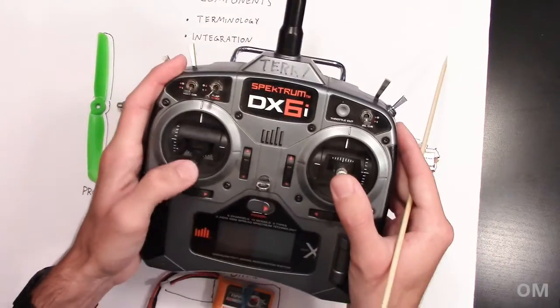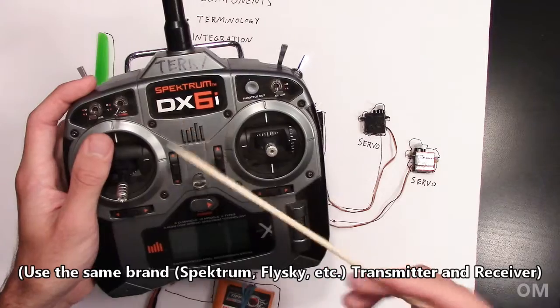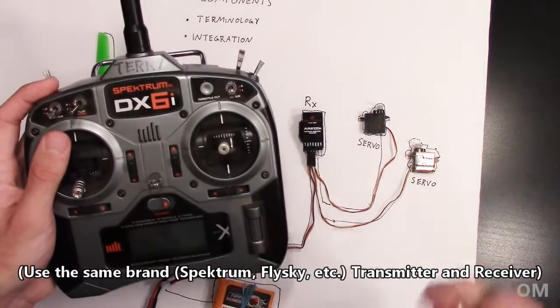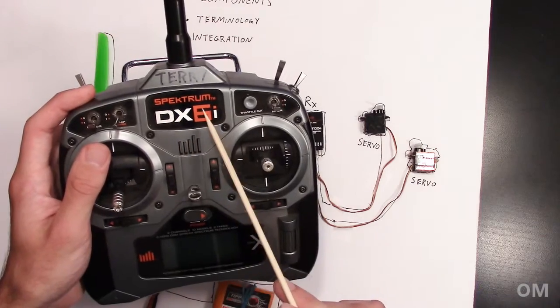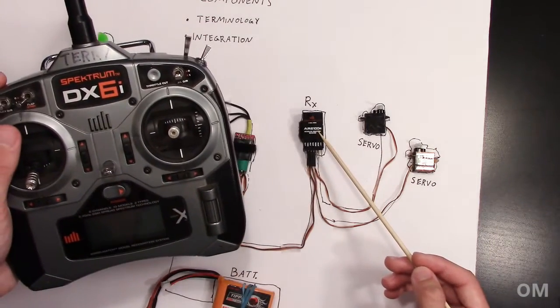So this guy right here, basically, all you need to know right now is it needs to be the same brand as the receiver. A lot of times you can buy these in bundles, meaning you can buy the receiver with the transmitter. But so like if you get a Spectrum receiver or a Spectrum transmitter, just get a Spectrum receiver and you'll be fine.